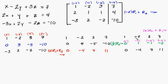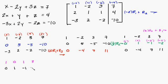So we're going to add row 2 plus row 1. 0 plus 1 is 1. 2 plus negative 2 is 0. Negative 2 plus 3 is 1. And negative 4 plus 7 is 3. Then just go ahead and copy everything else down: 0, 1, negative 1, negative 2. 0, negative 4, 7, 11.